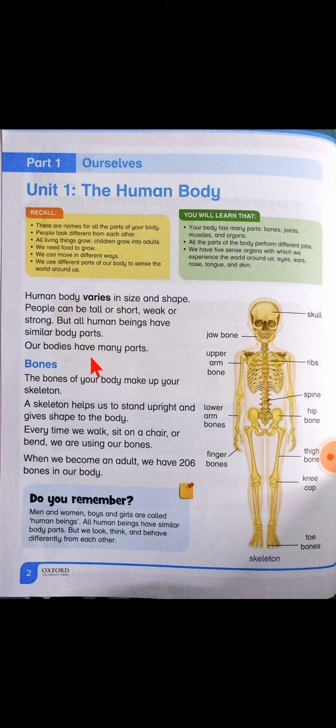Our bodies have many parts. بیٹا، میں پہلے بھی آپ کو explain کر چکی ہوں کہ human body کی سب human bodies جو بھی ہیں ہماری different shapes بھی ہوتے ہیں، size بھی ہوتے ہیں۔ کوئی tall ہوتا ہے، کوئی short ہوتا ہے، کسی کو آپ نے بہت زیادہ fat دیکھا ہے، کوئی بہت زیادہ دبلا ہوتا ہے۔ لیکن بیٹا، human body کے sizes اور shapes تو different ہوتے ہیں لیکن سب کے پاس اللہ تعالیٰ نے same body parts دیئے ہیں — آپ کے دو ہاتھ ہیں، سب کے دو ہاتھ ہیں، آپ کی دو ٹانگیں ہیں، سب کی دو ٹانگیں ہیں، لیکن ان کے shapes اور size different ہوتے ہیں۔